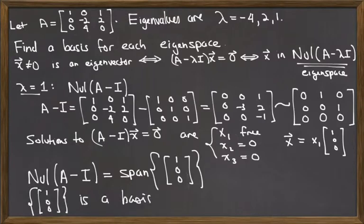Specifically, though, a basis is just the set containing that single vector. So the set containing the vector 1, 0, 0 is a basis for the null space of A minus I.